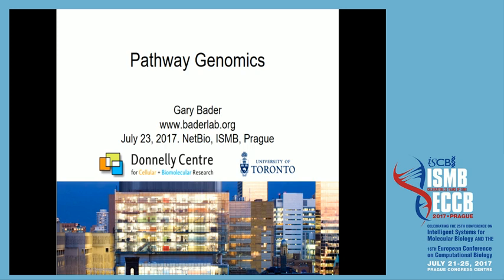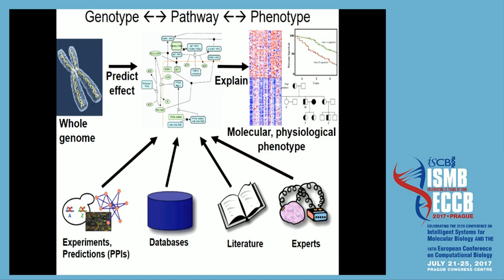My lab at the University of Toronto focuses on one main concept. From a computer science perspective, we're trying to understand causal models from big data. In biology, that generally means pathways from genomics or any kind of omics data, and typically we want to use these causal models to explain the relationship between genotype and phenotype.